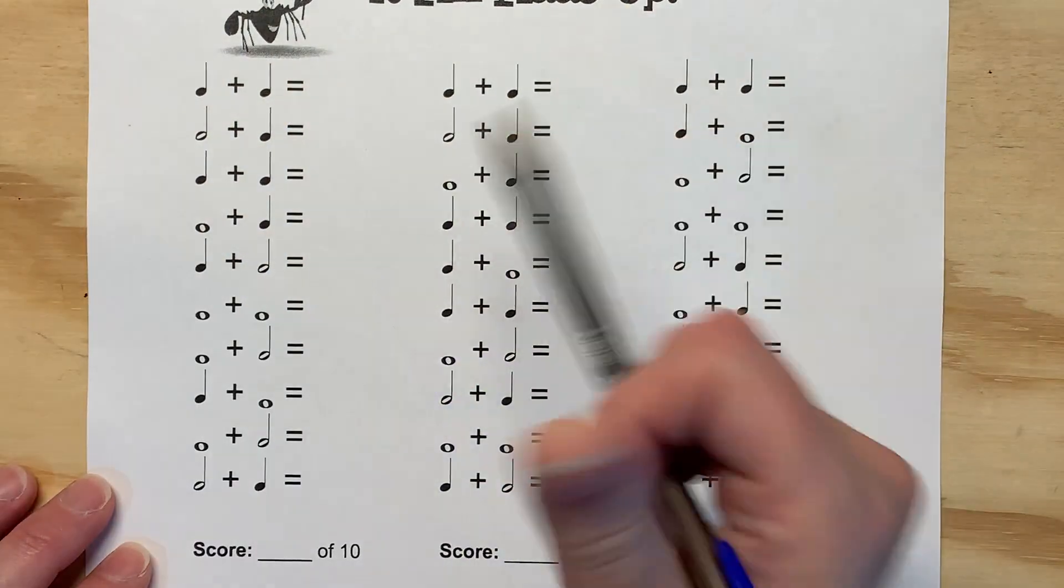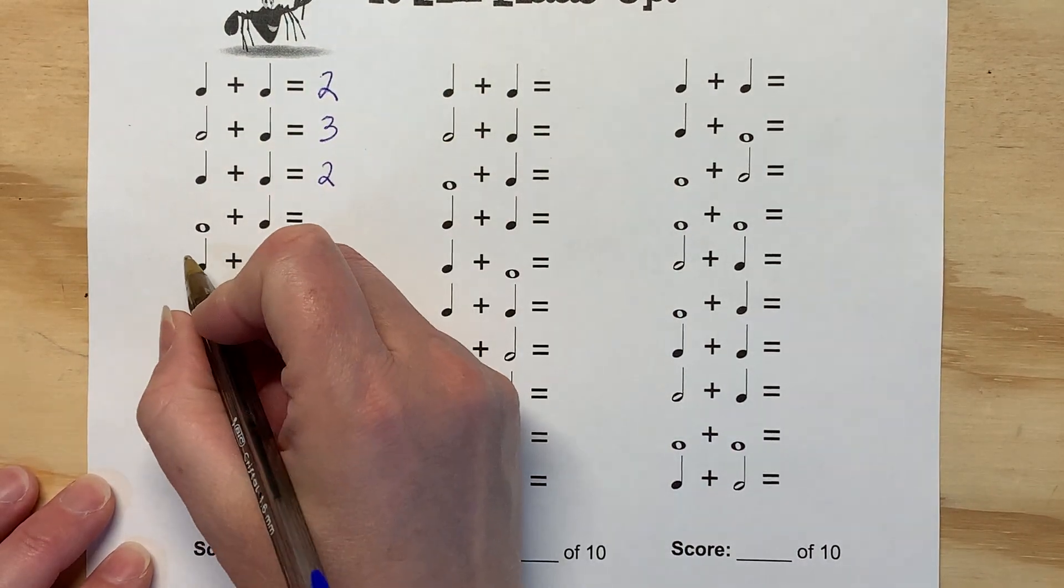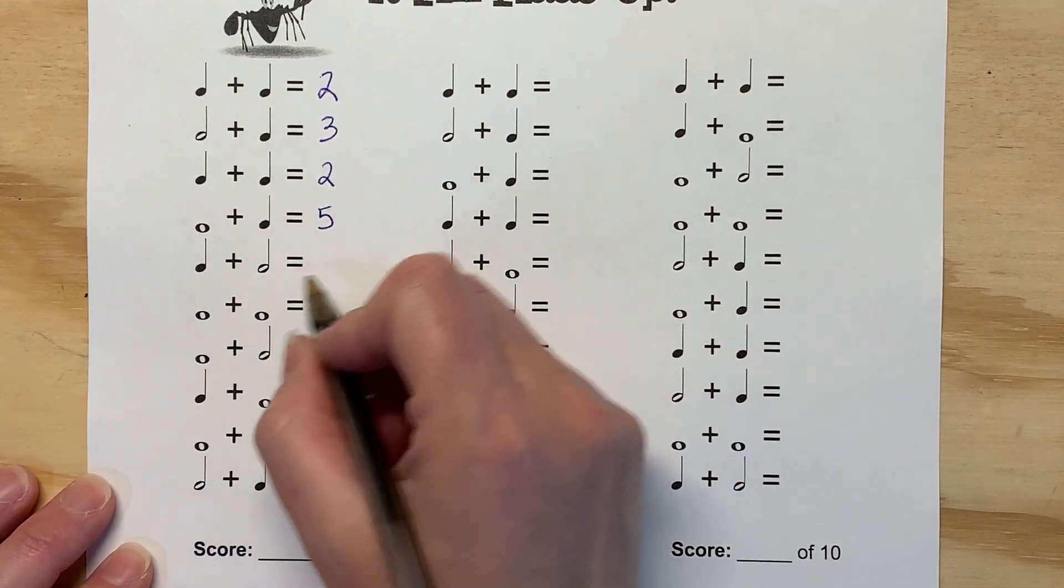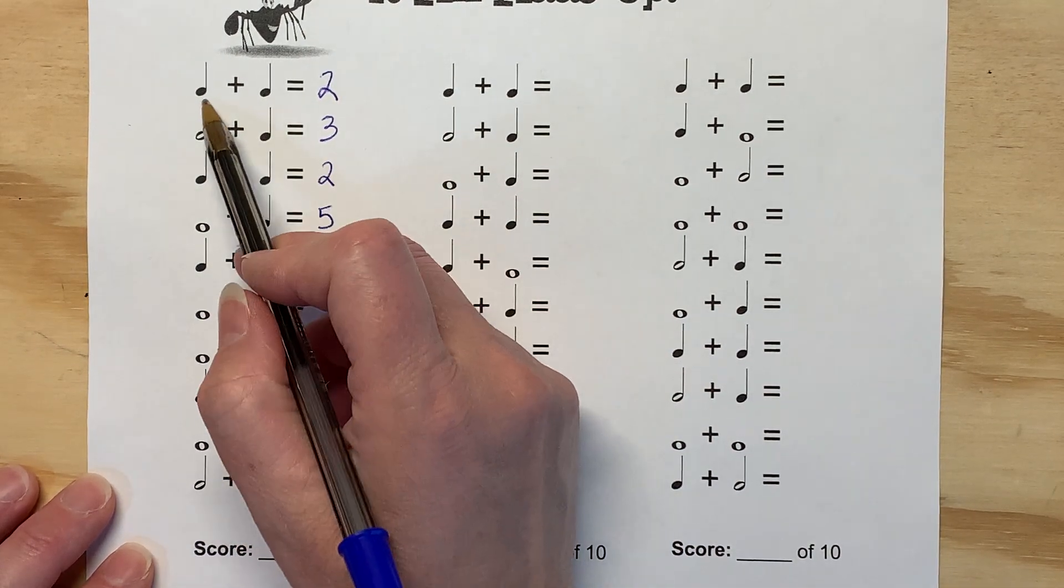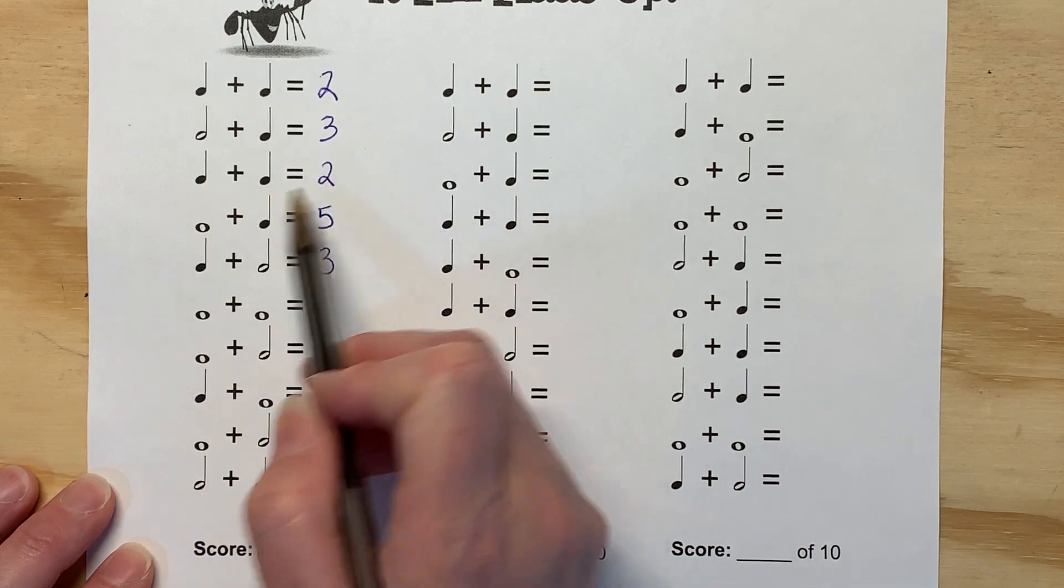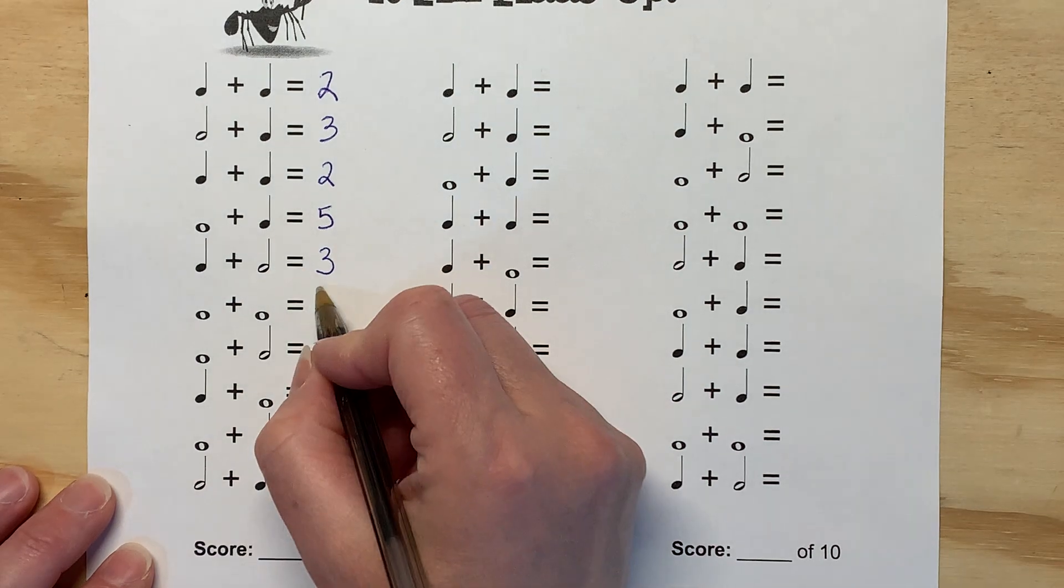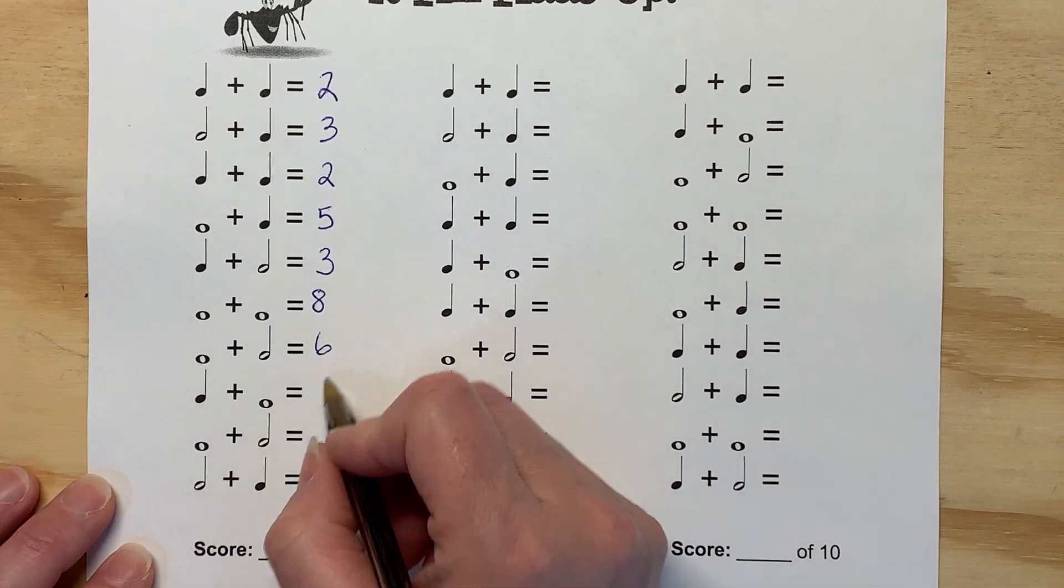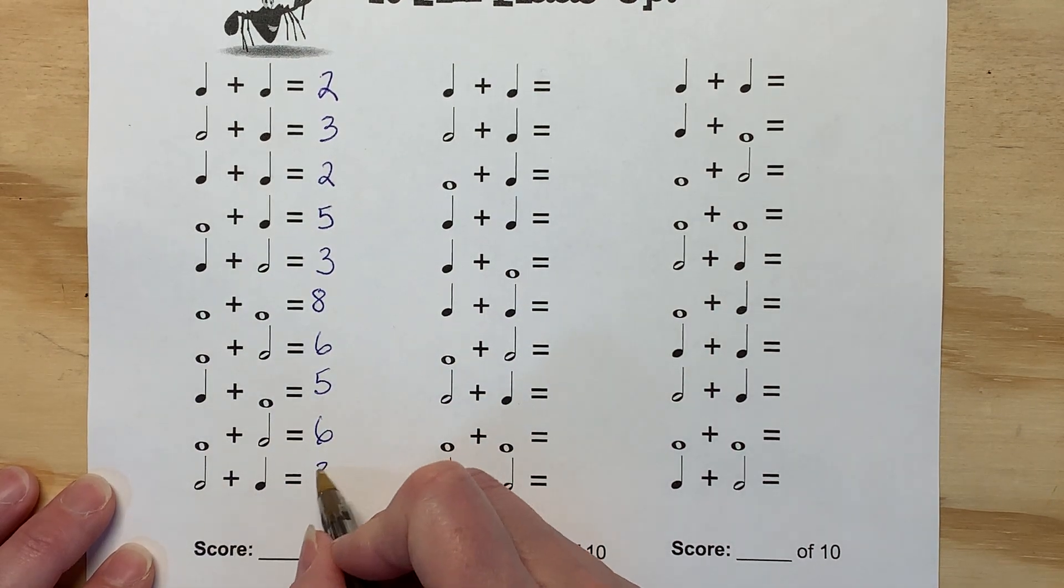I'm ready and you can go as fast as you want. Again, it's better to be accurate than to be fast. And while I'm talking, I'm trying to do math. So one beat, one beat, two. Two beats plus one, three. One plus one, two. Four beats plus one, five. One beat plus two, three. Four plus four, eight. Four plus two, six. One plus four, five. Four plus two, six. Two plus one, three.